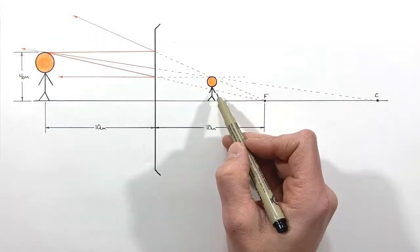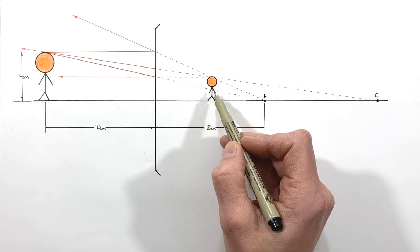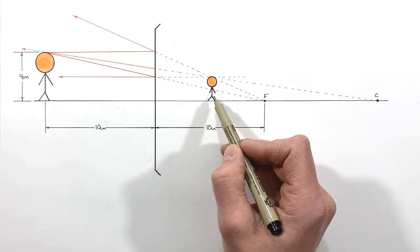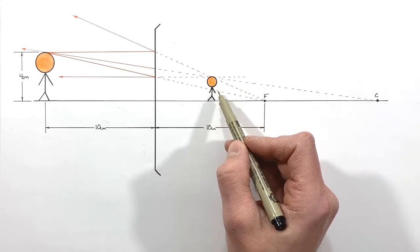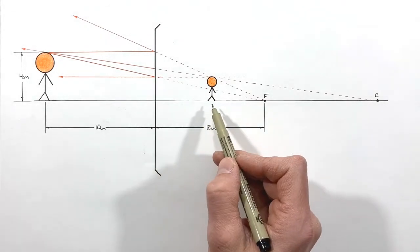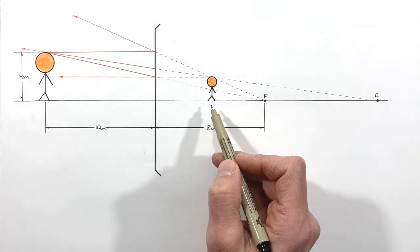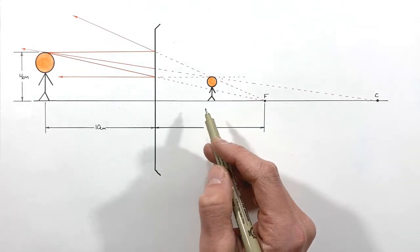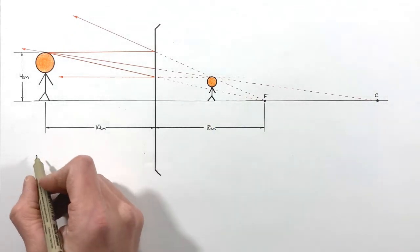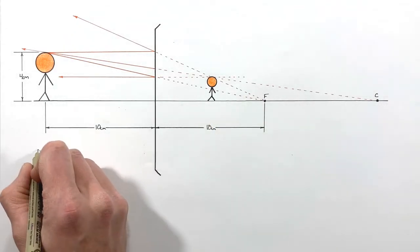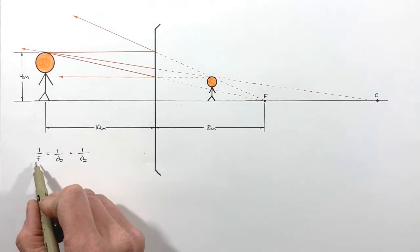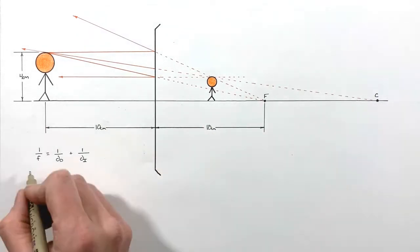From the ray tracing diagram, we can see that an image forms behind the mirror. That image is upright and smaller. Let's confirm this result using the mirror and magnification equations, starting with the mirror equation and looking at the focal length.